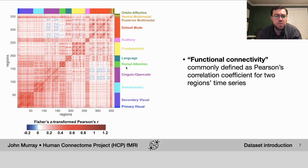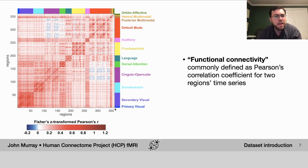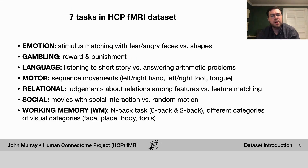Resting state data is also used to construct a popular measure in neuroimaging called functional connectivity. This is simply the Pearson correlation coefficient between two regions' time series. You can see here this correlation matrix of each of the 360 cortical parcels in this dataset. For the functional networks, we get this block-like structure indicating a high level of correlation or functional connectivity for parcels that belong to the same functional network.